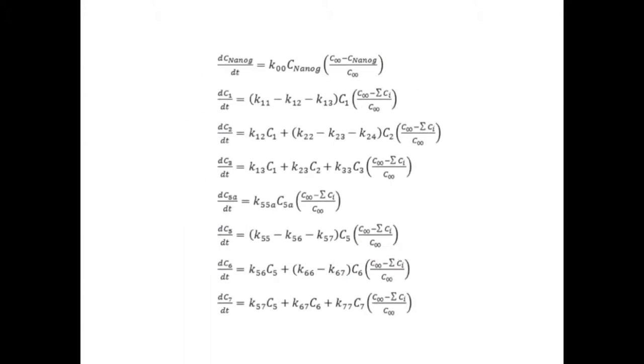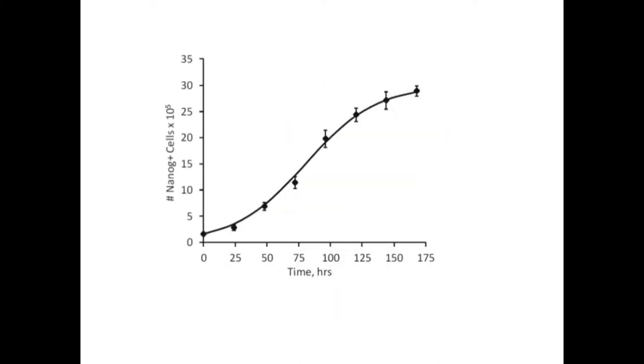We then generated a set of ordinary differential equations derived from mass or material balances for each subpopulation to represent their kinetics in culture, and fit this ODE-based model to our cell subpopulation dynamics data. This model fit was performed using a least squares regression by quantitatively estimating rate constants of each cell subpopulation's cell fate decisions, including cell renewal, differentiation, and cell death.